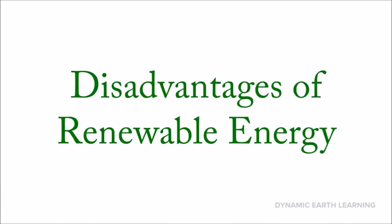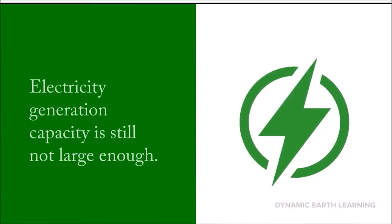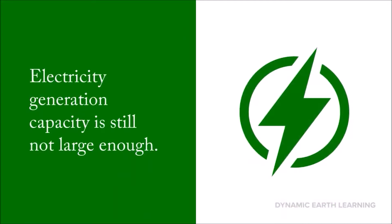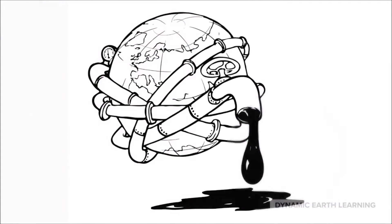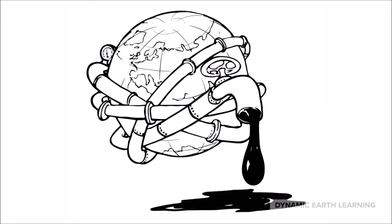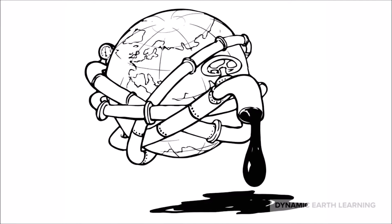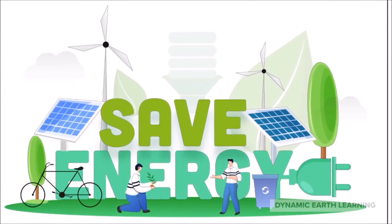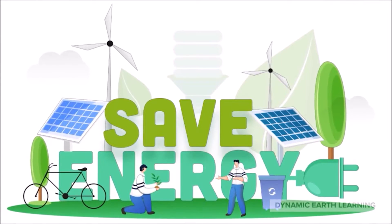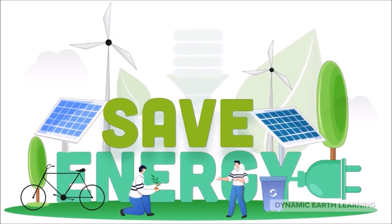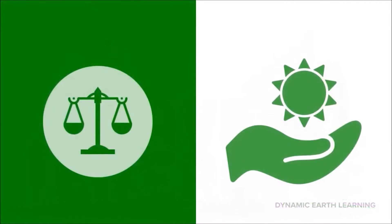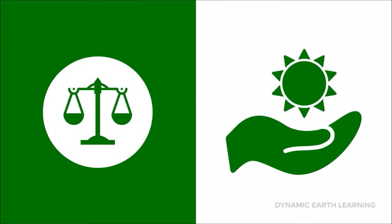Disadvantages of renewable energy. First, the electricity generation capacity is still not large enough. It's difficult to generate the quantities of electricity compared to traditional forms of energy generation like fossil fuels. This may mean that we need to reduce the amount of energy we use or just build more energy facilities. This also shows that the best way to solve our energy problems may be to balance many different power sources.